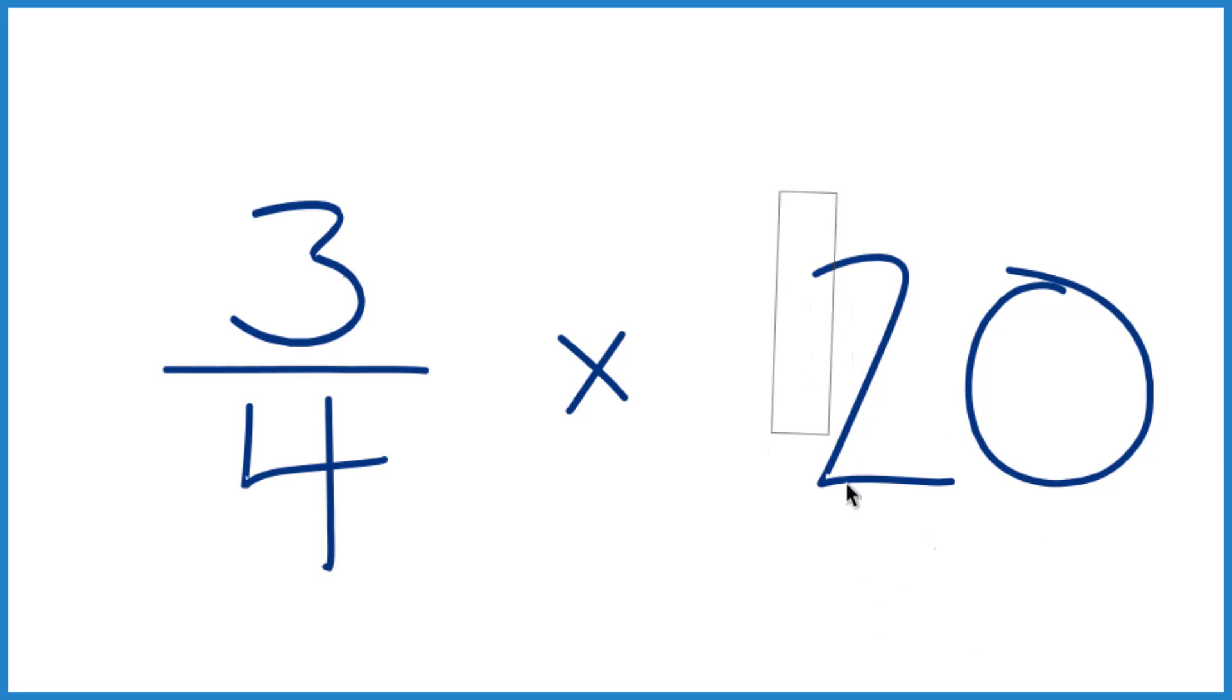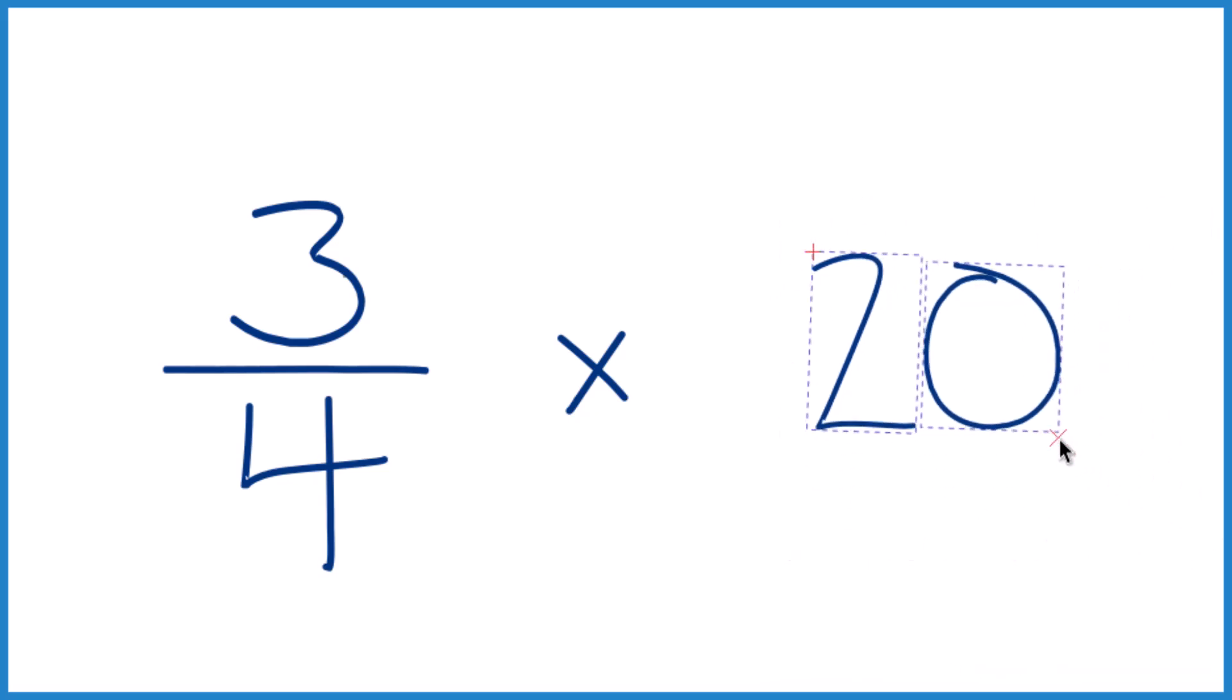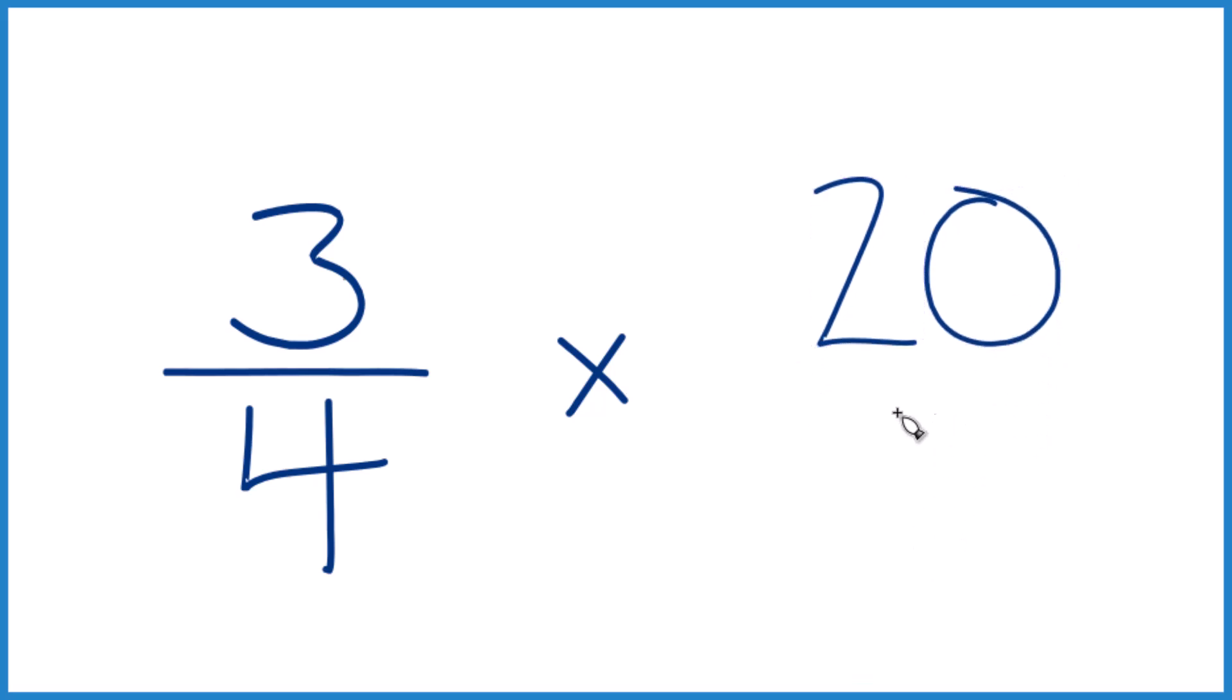And for that 20, I like to consider that to be 20 over 1, because 20 over 1, you're just dividing by 1. It's still 20,